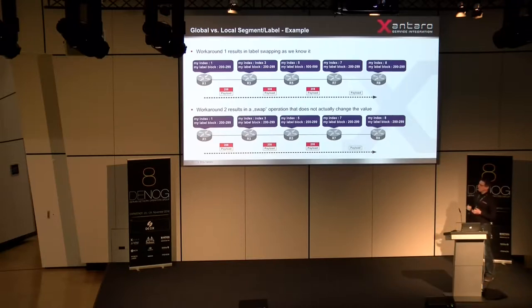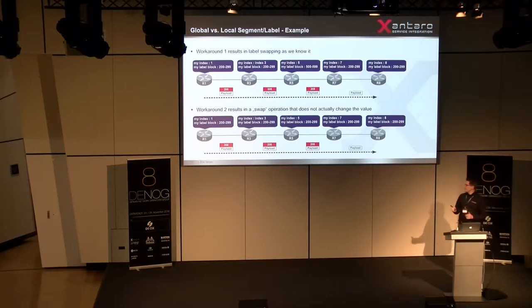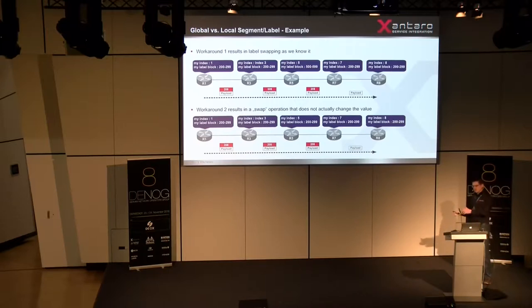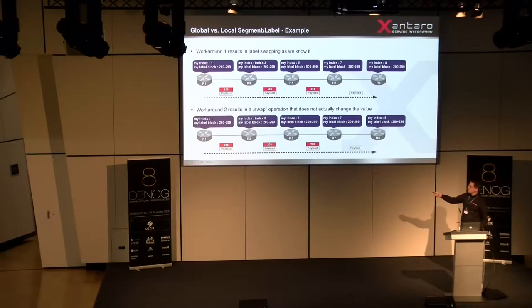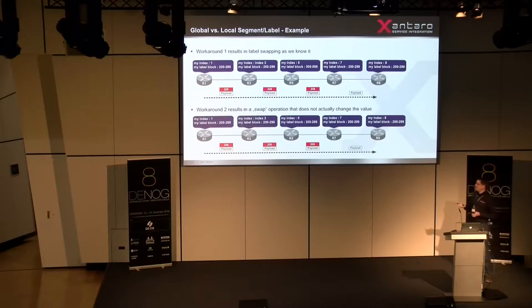R5 receives the packet with label 508, recognizes index 8 from its special label block, determines it must go to R8 via R7, and uses R7's label base to transmit onward, eventually delivering the packet to R8. In contrast, if all devices use the same global label block starting at 200, label 208 has the same meaning on every device and does not need to be swapped at each hop — it's a pseudo-swap or a label-unchanged forward operation. This is something new compared to traditional MPLS, where labels previously always changed at every hop.